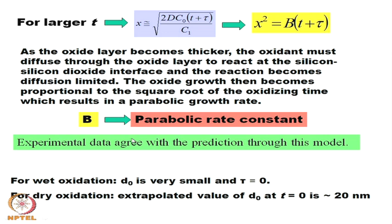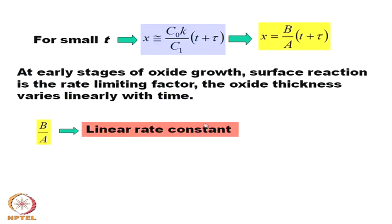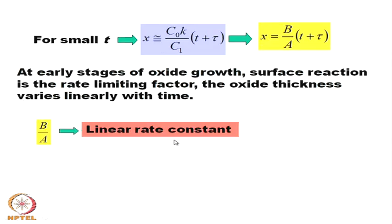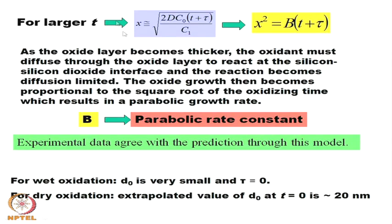The oxide growth becomes proportional to the square root of oxidizing time, resulting in a parabolic growth rate. B is the parabolic rate constant. From this model, for small t the rate constant is linear (B/A), and for large t it is B, which is parabolic in nature.